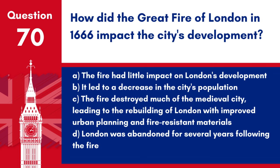Question 70: How did the Great Fire of London in 1666 impact the city's development? a. The fire had little impact on London's development. b. It led to a decrease in the city's population. c. The fire destroyed much of the medieval city, leading to the rebuilding of London with improved urban planning and fire-resistant materials. d. London was abandoned for several years following the fire. Answer: c. The Great Fire of London was a catalyst for the modernization of the city's infrastructure and architecture.